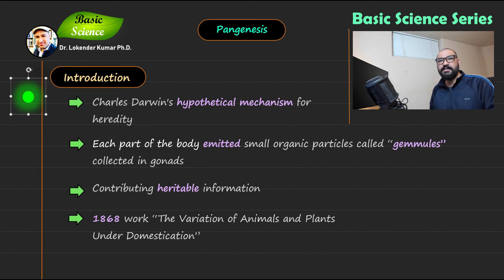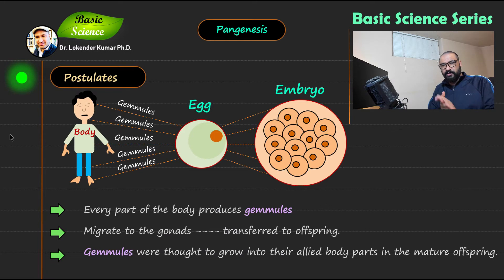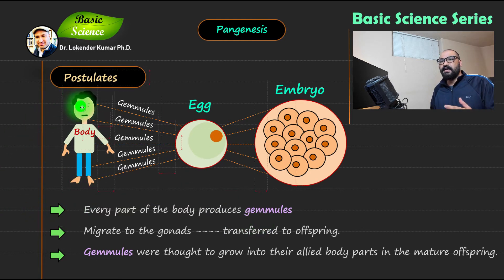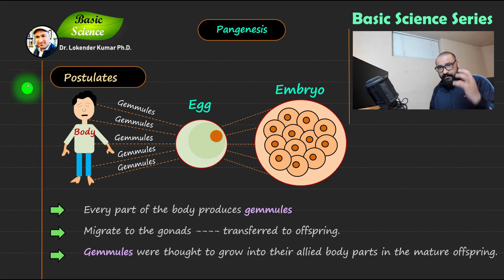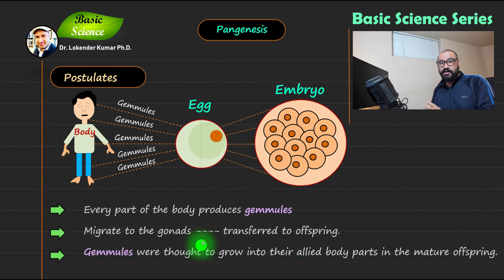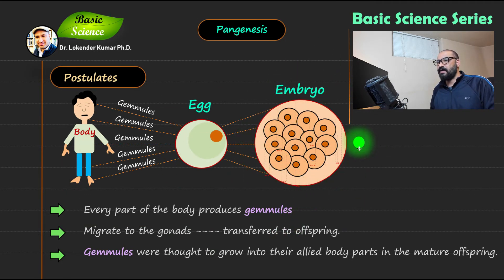Moving to the next slide with an illustration of pangenesis: point number one is that every part of the body produces gamules. Every organ produces small organic molecules called gamules, which get collected in the gonads and then transmit information to the embryo. Point two is that they migrate to the gonads and then transfer to the offspring.